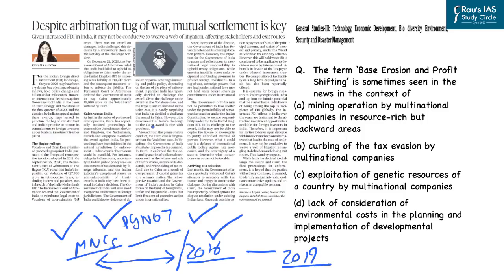The author notes that introducing retrospective amendments to taxation is within Parliament's powers; however, such amendments lead to greater uncertainty in taxation and discourage foreign investment in India. Accordingly, the government needs to be extra cautious before introducing such sweeping amendments. The author concludes that rather than challenging the arbitration awards against Vodafone and Cairn Energy, the government of India should amicably settle the issue based on mutual understanding.